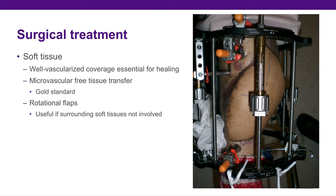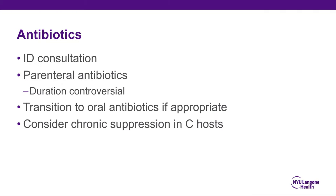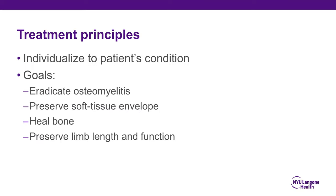Don't forget the soft tissue — a well-vascularized coverage is essential for healing. Microvascular free tissue transfer is still the gold standard. Rotational flaps can be tricky because the surrounding soft tissue is often involved in the osteomyelitis, but if it's not, that's a great solution as well. For antibiotics, you need ID consultation. Parenteral antibiotic duration is still controversial — anywhere from four to six weeks, sometimes two weeks IV followed by four weeks oral — which basically tells you we don't really know the right answer. Transition to oral antibiotics if appropriate and consider chronic suppression in C-hosts. Your treatment principles are individualized to the patient's condition; goals are to eradicate the osteomyelitis, preserve the soft tissue envelope, heal the bone, and preserve limb length and function.